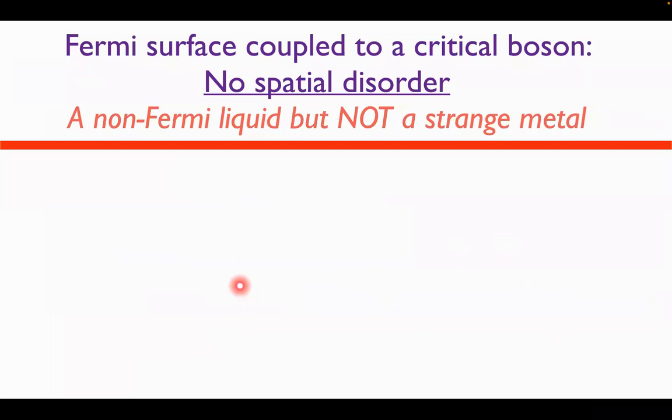Okay, so this is defined by single particle property. When I say a non-Fermi liquid, this is what I mean. When I say a strange metal, I mean something that has linear resistivity and all the other properties are defined. And those are not equivalent definitions, as we'll see.